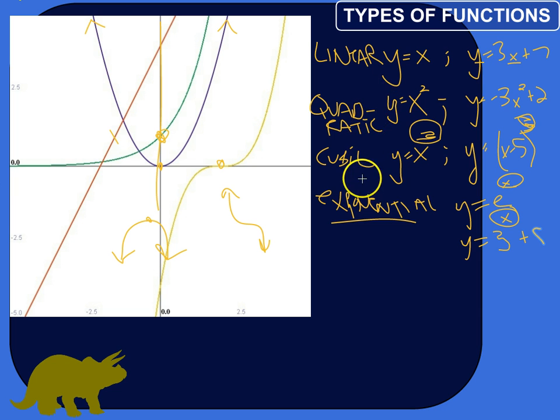So you've got linear, quadratic, cubic, and exponential functions. They have different kinds of equations that govern them. And the graphs have different things that they do, different characteristics by which you can identify them.